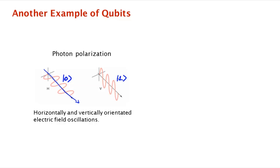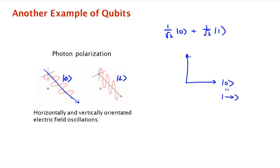But what if the polarization is diagonal — at a 45-degree angle? Then the state of this qubit is 1/√2 |0⟩ + 1/√2 |1⟩. So horizontal polarization is |0⟩, vertical polarization is |1⟩, and you can also have a polarization at any angle — that's the state of the polarization qubit that a single photon carries.